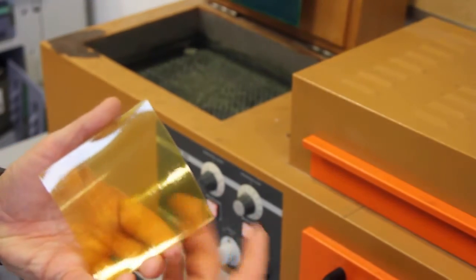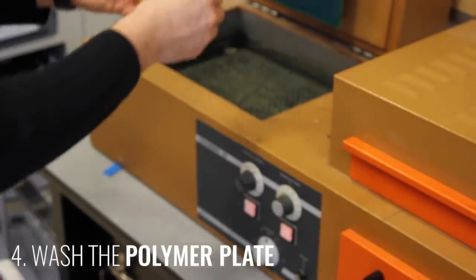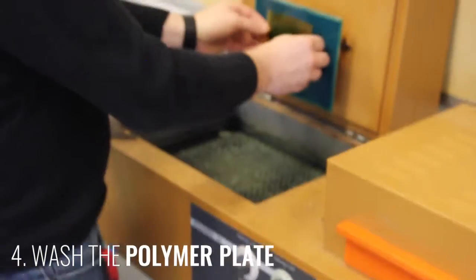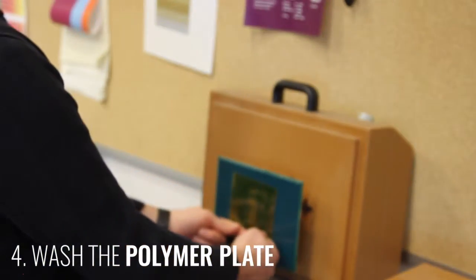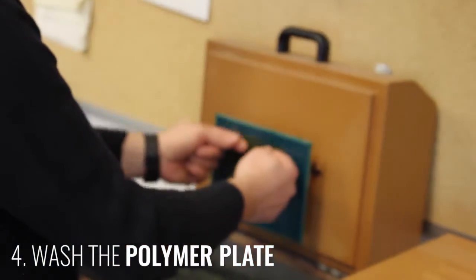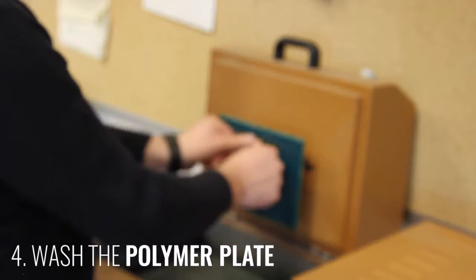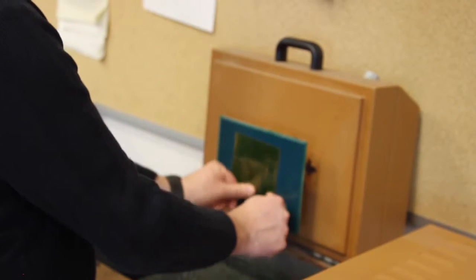At this point we've removed the ortho film from this surface. The clear carrier on this polymer plate is on the back side which is where we're going to attach it to the washing tray. We want to make sure that it's not the polymer side that we attach to this green material but the clear carrier.